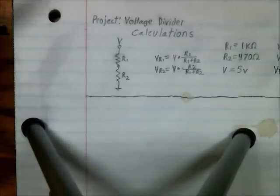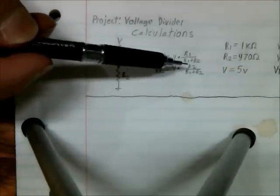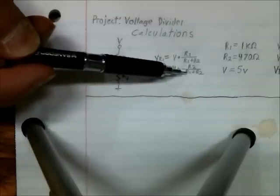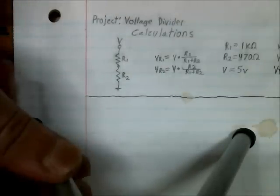And the way to calculate the voltage across R2 is V times R2 over the sum R1 plus R2. And let's give those some values.